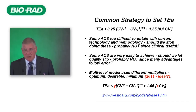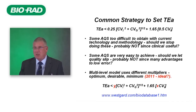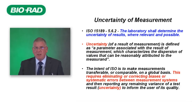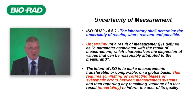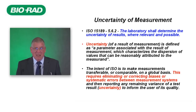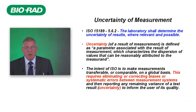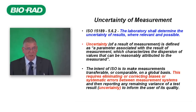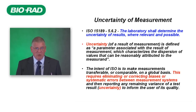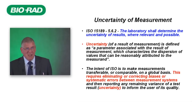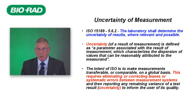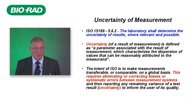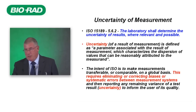At our 2011 convention, as you'll see in the preprint in your packs, we suggested there might be an ideal — a fourth level of analytical quality specifications based upon biology. Now let's turn to measurement uncertainty. ISO 15189 states clearly: the laboratory shall determine the uncertainty of results where relevant and possible. The definition: a parameter associated with the results of measurement which characterises the dispersion of values that can be reasonably attributed to the measurand. The intent of ISO is to make measurements transferable or comparable over time and geography, requiring elimination or correction of biases.